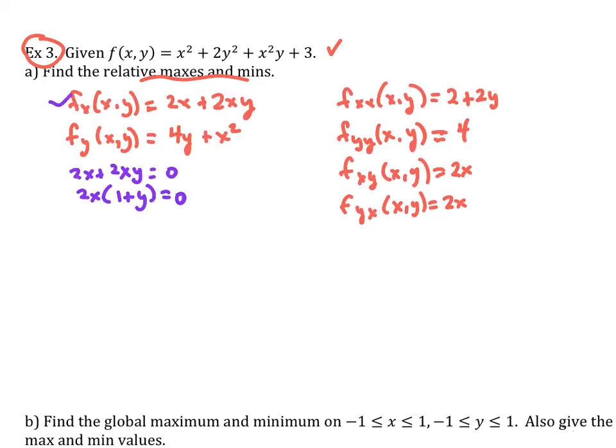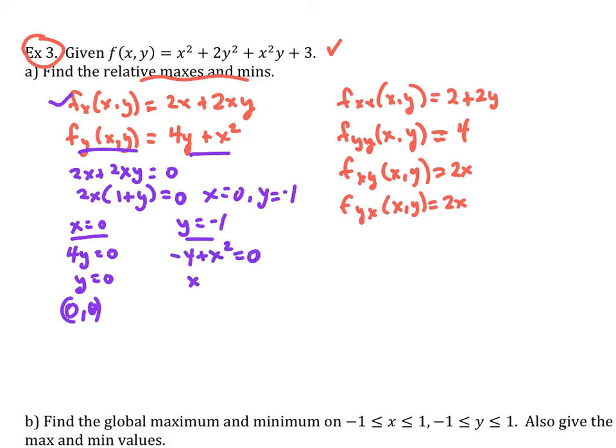So I can set my partial with respect to x equal to 0 and I'm going to get x equal to 0 and y equal to negative 1. So if I go ahead and plug that into here, I'm going to get my x equal to 0 case. And when that happens, I'm going to get 4y is equal to 0. So y is equal to 0. So I'm going to get 0, 0. So that's one of my points. And then when I have y equal to negative 1 and I plug it into here, I'm going to get negative 4 plus x squared. And I want to set that equal to 0. So then that's going to give me x is equal to plus or minus 2. So I'm going to get two points out of this. 2, negative 1 and negative 2, negative 1. So these would be all of my critical values.